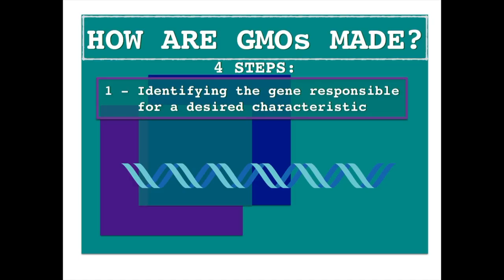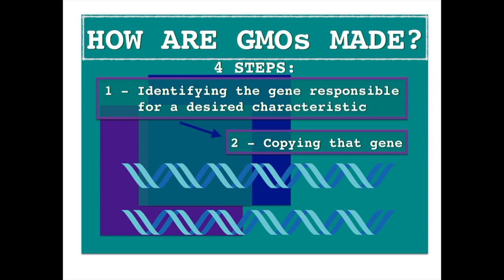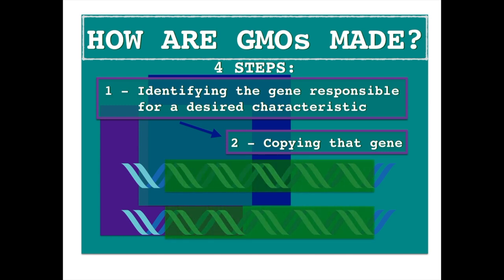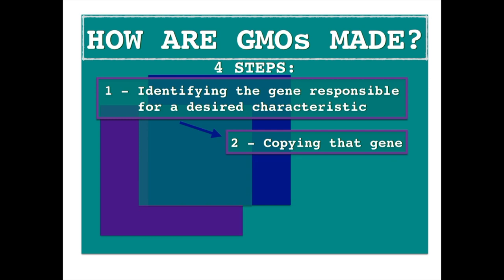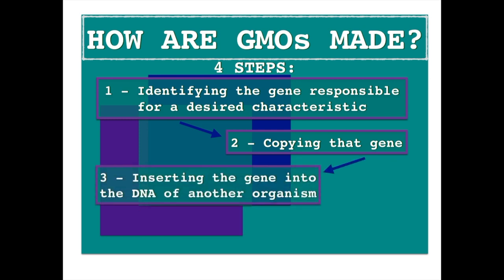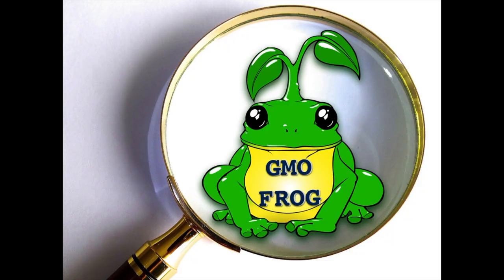The steps to create GMOs are: first, we have to identify the gene responsible for the desired characteristic. Then we copy that gene and insert it into another organism, which then becomes a GMO, and we allow it to grow in suitable conditions — though the result is much less dramatic than a plant frog.